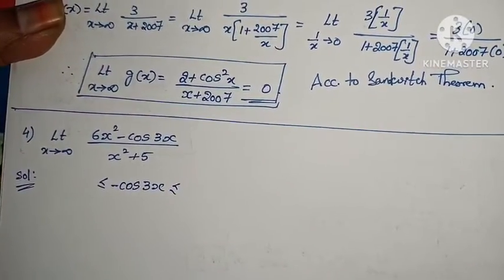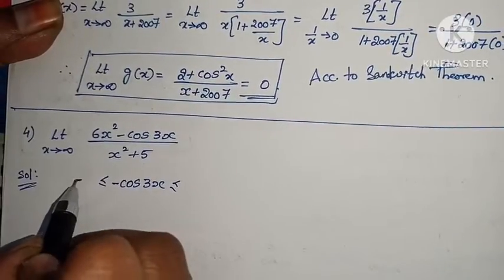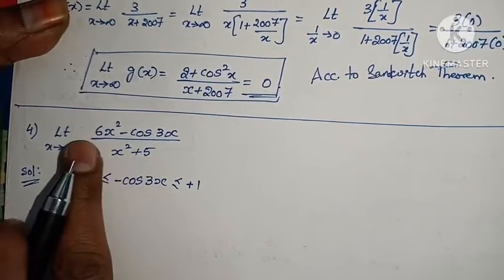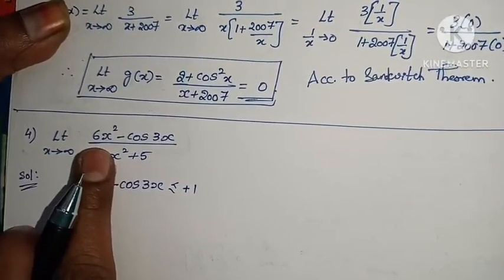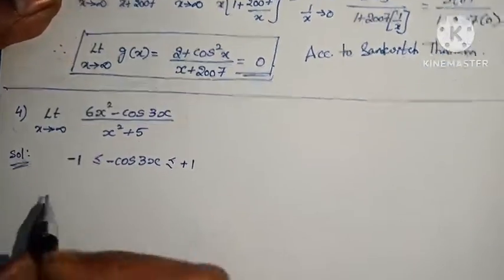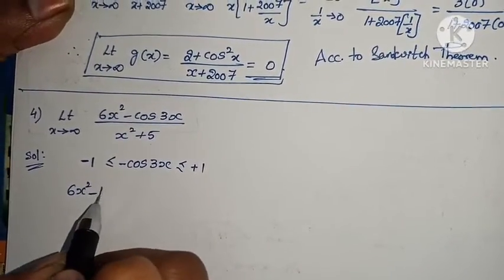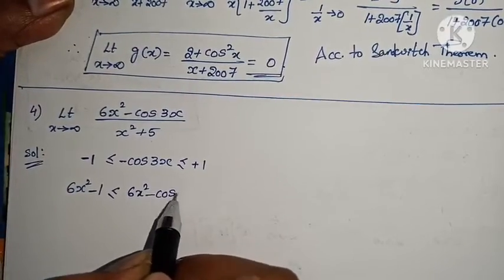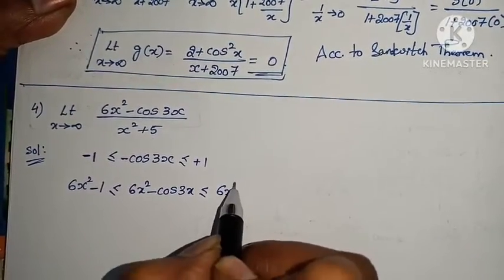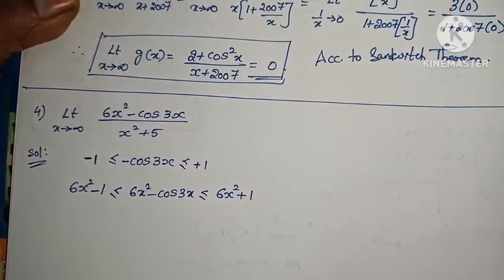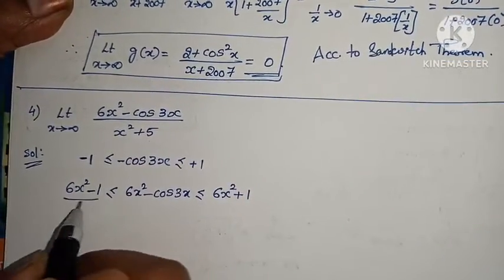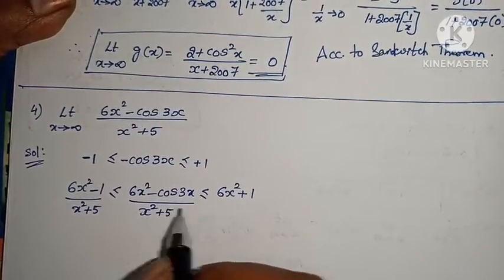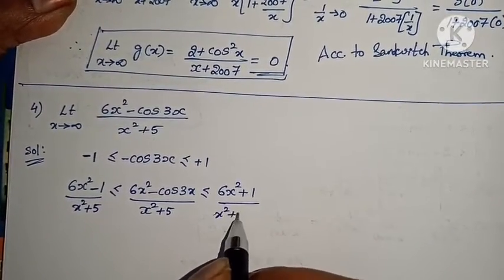Cosine ranges from -1 to +1. With the 6x² term, we write: (6x² - 1) ≤ (6x² - cos 3x) ≤ (6x² + 1). Dividing all parts by (x² + 5): (6x² - 1)/(x² + 5) ≤ (6x² - cos 3x)/(x² + 5) ≤ (6x² + 1)/(x² + 5).